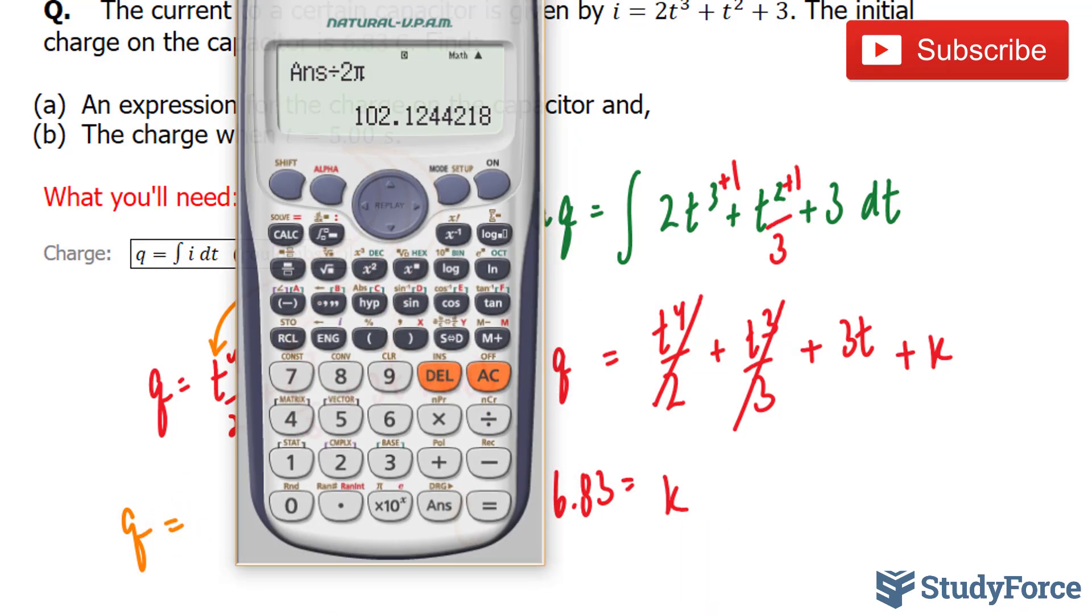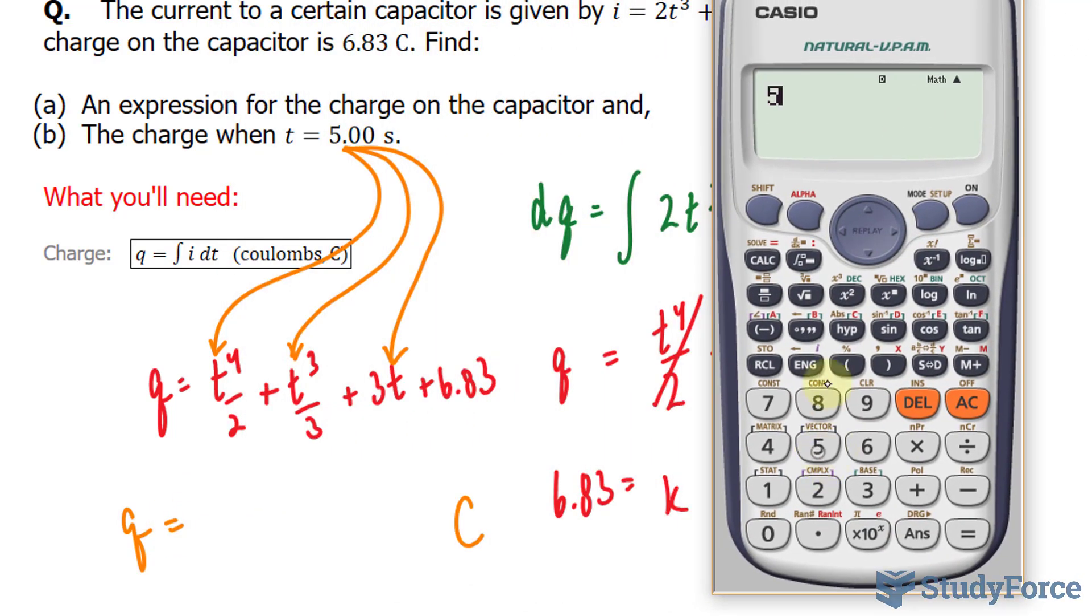Using my calculator: 5⁴/2, plus 5³/3, plus 15 (3 times 5), plus 6.83. I end up with 376.